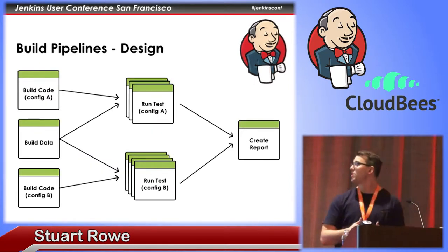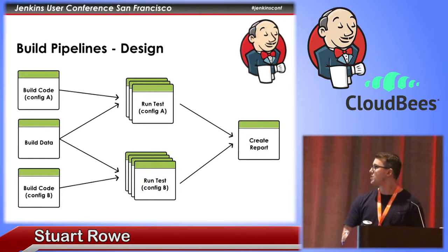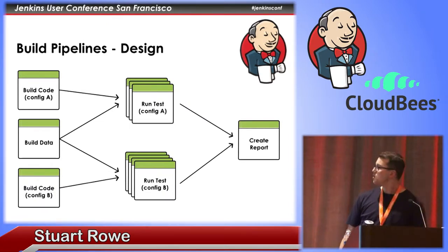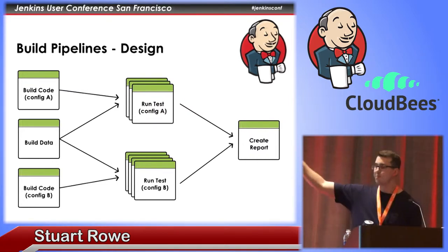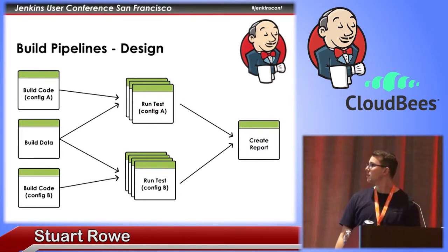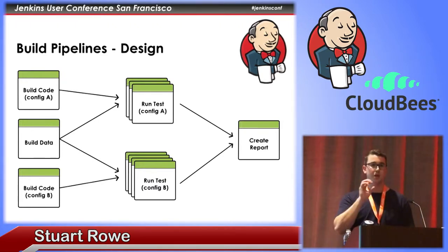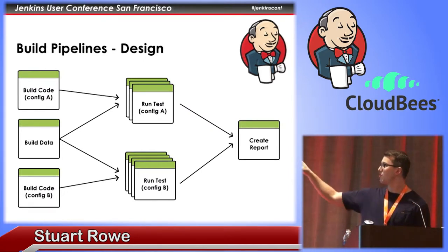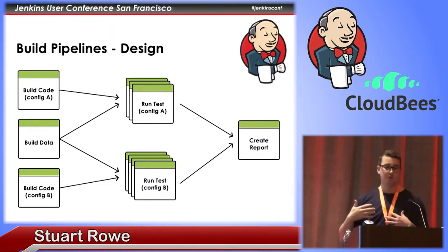The second thing I want to talk about is how we approached creating pipelines. This is a typical example of how we approach pipelines. On the left side there is a build phase where we're generating builds for a set of configurations. In the middle is our testing phase where we take those build configurations and test each one against some set of test types. And finally we collect all the information about the build and test phases and create a report that encapsulates what actually happened.